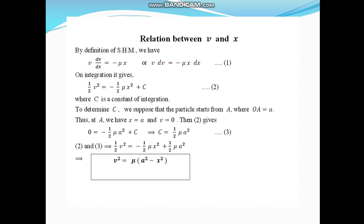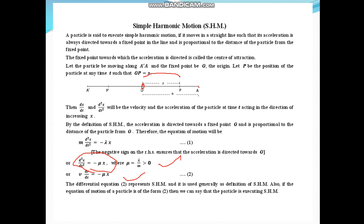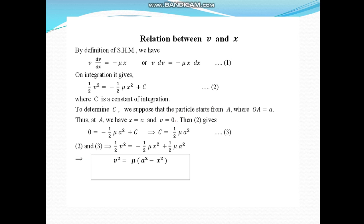On integrating, we get ½v² = −½μx² + c, where c is a constant. To determine c, we suppose that the particle starts from A, where OA = A, and at point A we have x = A and velocity v = 0. Substituting v = 0 and x = A, we get c = ½μA².